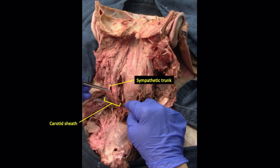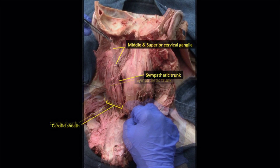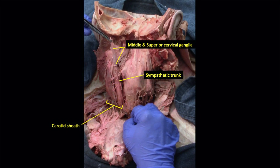Just behind the carotid sheath, we also find the sympathetic trunk. The preganglionic fibers arose in the sympathetic fibers in the upper thorax, coalesce into a nerve, and travel into the neck to supply all sympathetic innervation to the head and neck. Following the sympathetic trunk superiorly, you get to the middle and superior cervical ganglia, where the preganglionic fibers will synapse and then become postganglionic fibers. These will then piggyback onto the internal and external carotid arteries to their final destinations. Expect variations in the appearance of the middle and superior cervical ganglia from cadaver to cadaver.